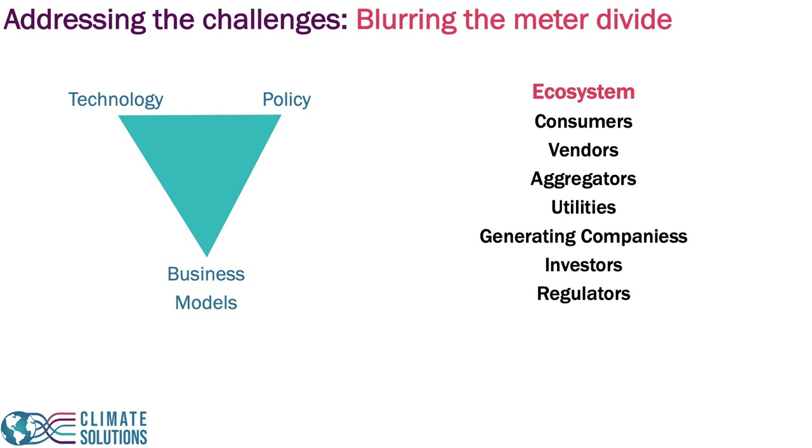We need to address the technology, policy, and business models to enable this coordination. For example, today one limitation is that if power is injected back into the grid and utilized by someone else, there is no mechanism that credits the power from one customer to the next. This is not a technology limitation — it's a policy limitation. In rural areas in the U.S. we have allowed such credit, but not in urban areas, and such a credit would enable transactions between customers in the distribution grid.